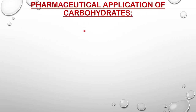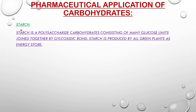Now we are going to discuss about the pharmaceutical application of carbohydrates - what are the pharmaceutical applications. We will first discuss about starch. Starch is a polysaccharide carbohydrate consisting of many glucose units joined together by glucosidic bonds. Starch is also produced by all green plants as an energy store.